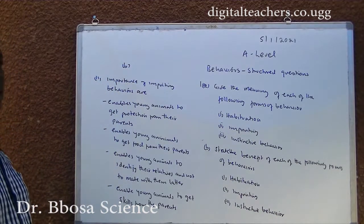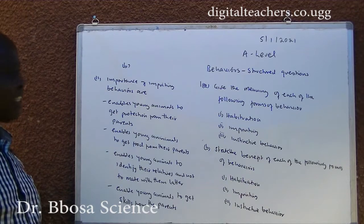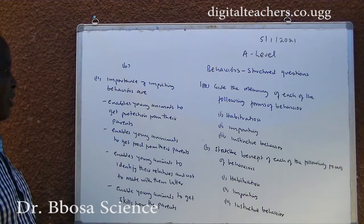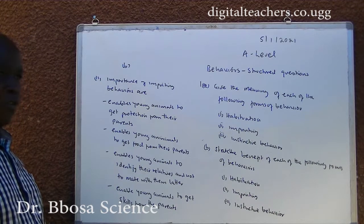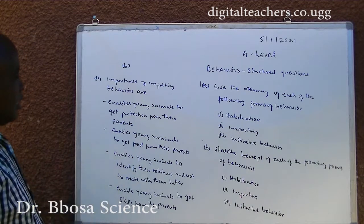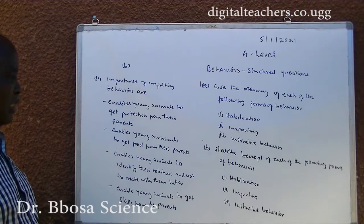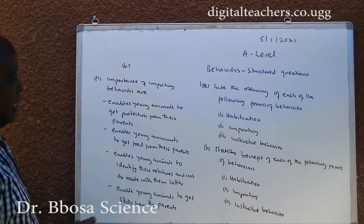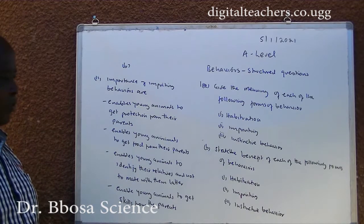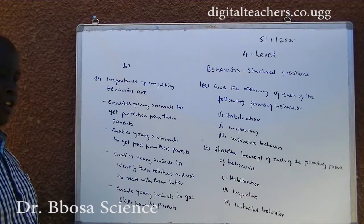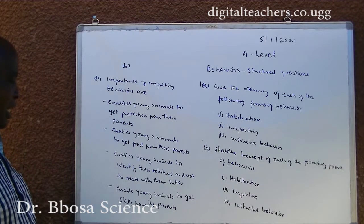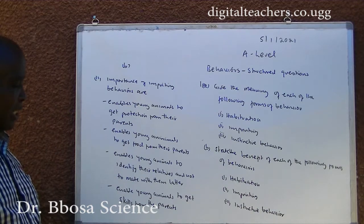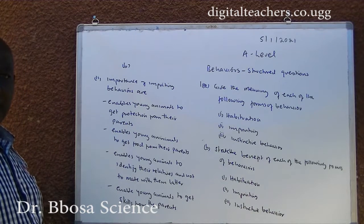Number 2: Importance of implanting behaviors are: 1. Enables young animals to get protection from their parents. 2. Enables young animals to get food from their parents. 3. Enables young animals to identify their relatives and not to mate with them later. 4. Enables young animals to get skills from their parents.